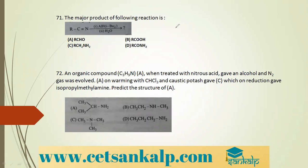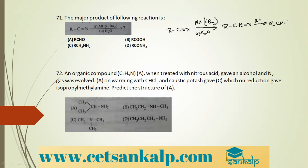Q71: The major product of the following reaction. They have given a cyanide compound treated with aluminum tert-butoxide (isobutoxide), followed by hydrolysis. This gives an intermediate RCH=N, and on further hydrolysis we get RCHO. When cyanides are treated with this reagent followed by hydrolysis, cyanides get converted to aldehydes. So aldehyde is the product — option A.